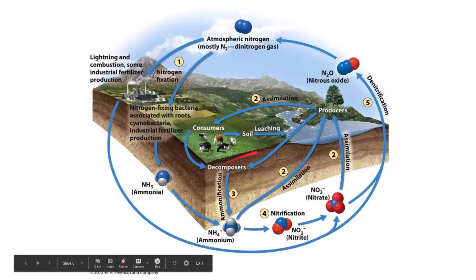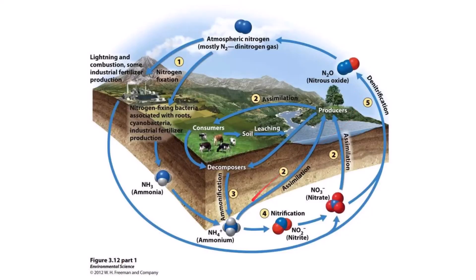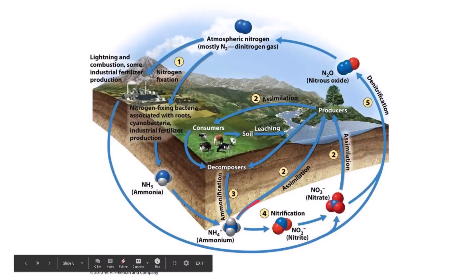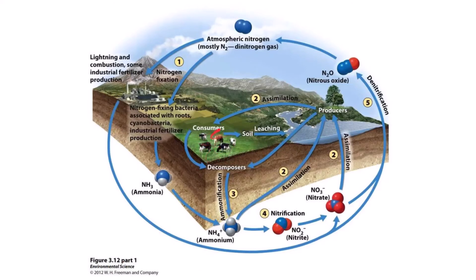In the diagram you can see assimilation: ammonium is taken up by producers, which are then eaten by consumers such as grazing cows. Their excretions, and when they die and decompose, all of that nitrogen is returned to the ground through ammonification.